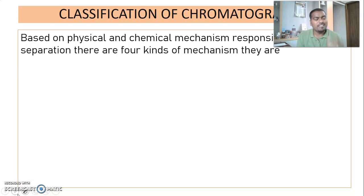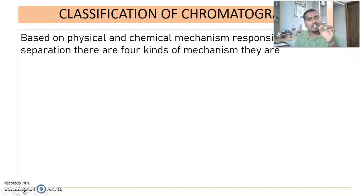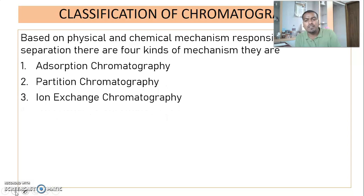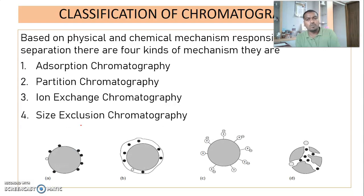The second type of classification is based on the chemical and physical interactions that take place between the sample and the stationary phase, and between the sample and the mobile phase. Based on the physical and chemical mechanism responsible for separation, we classify chromatography into four types: adsorption chromatography, partition chromatography, ion exchange chromatography, and size exclusion chromatography. We will discuss all these types in detail in the next video.